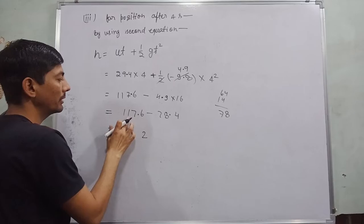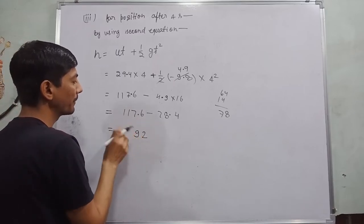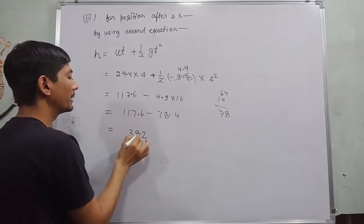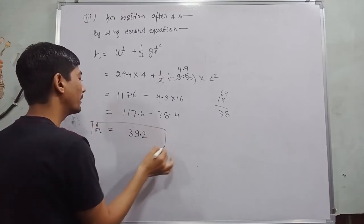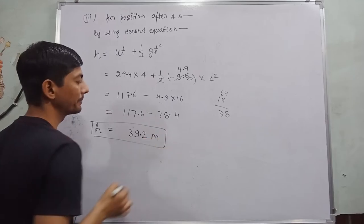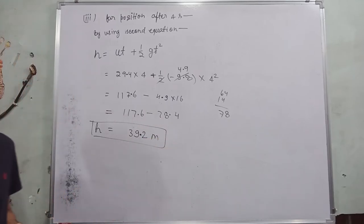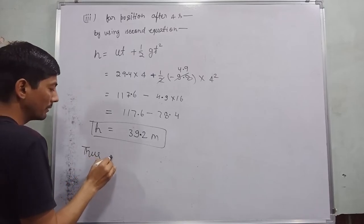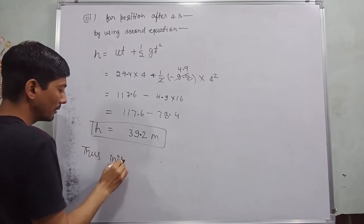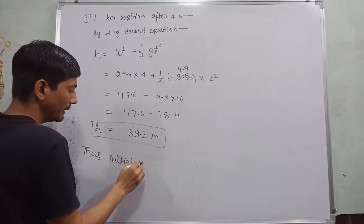take carry from 1 become 17, 17 minus 8 become 9 and 10 minus 7 become 3. So it will be 39.2 meter. Thus